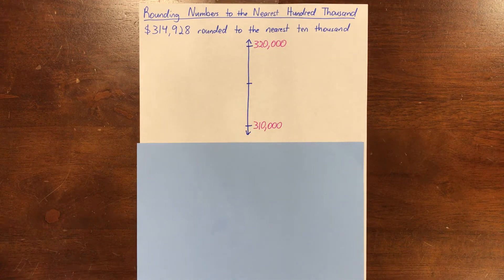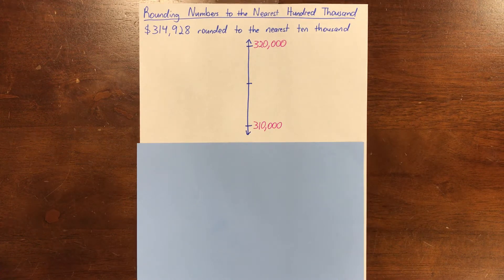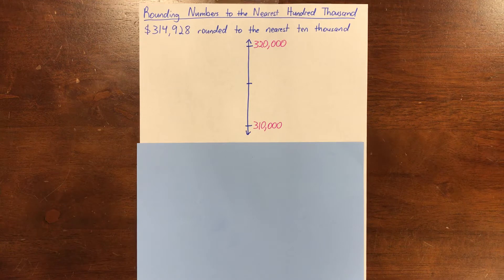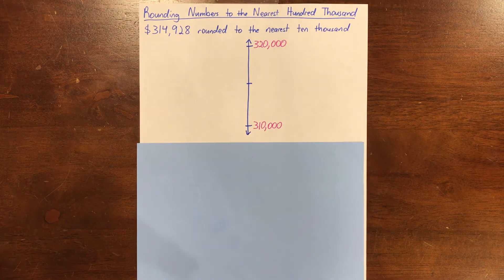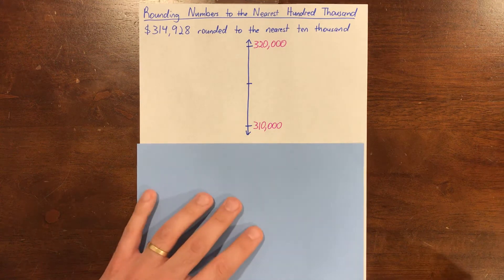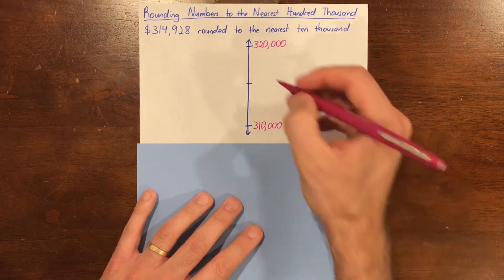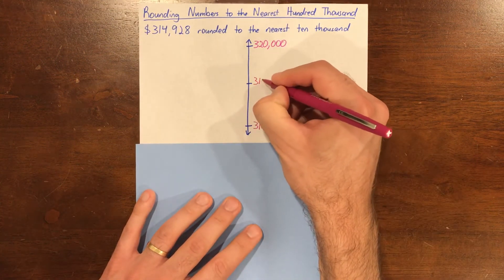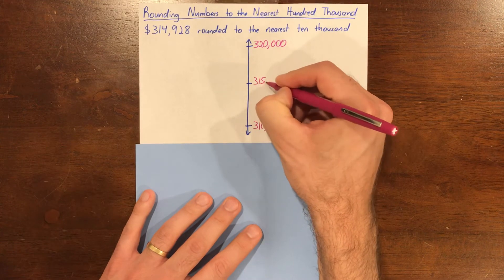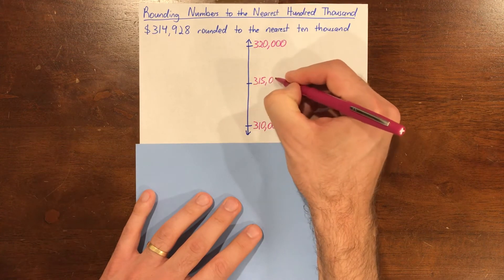What is the midpoint going to be? How do you know? Say it out loud. 5,000 is half of 10,000, so the midpoint would be 315,000.